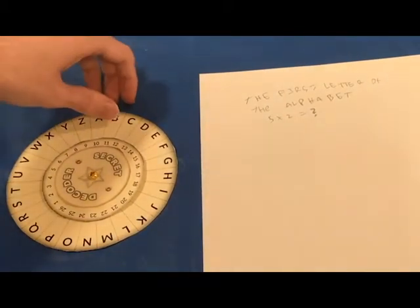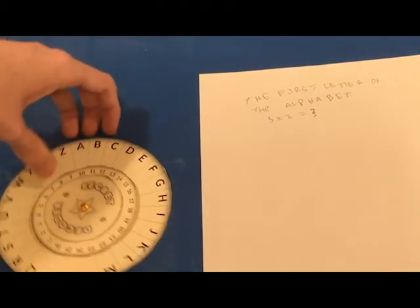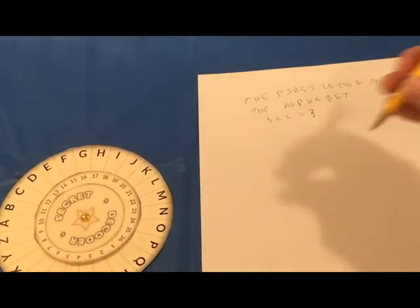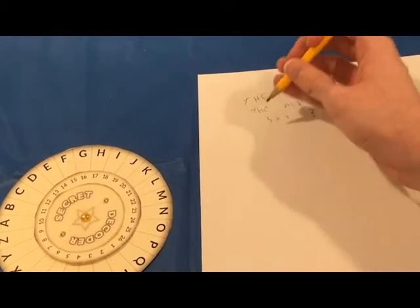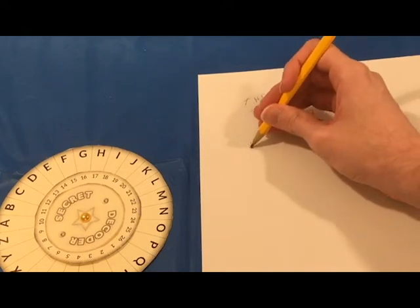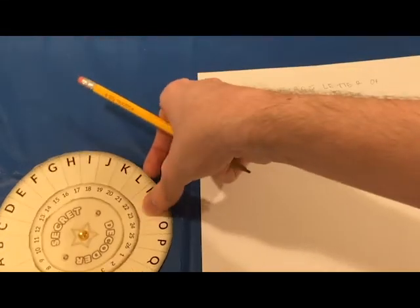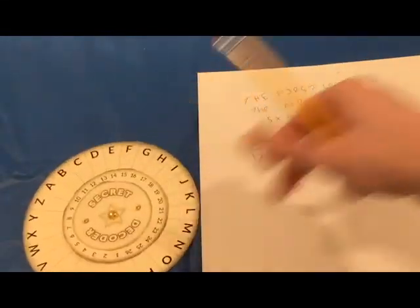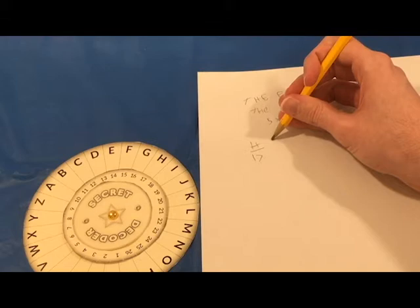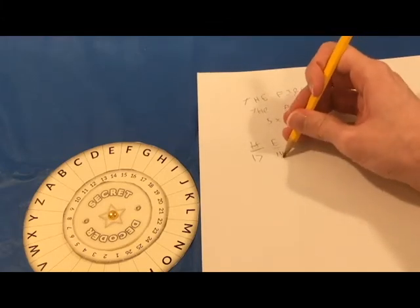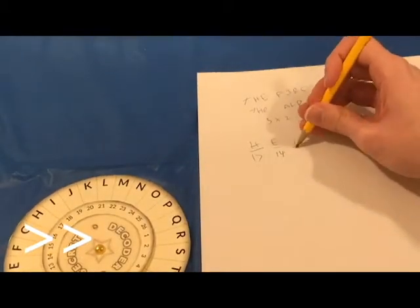Now, I want to encode the word hello, so I'll find the H on the wheel. So I'll go ahead and write down that H. And then I'll write down the number associated with it, which is 17. The next letter is E, which is associated with 14. And I'll continue for the rest of the letters.